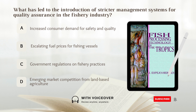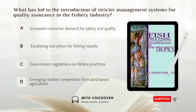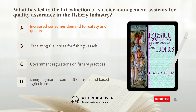What has led to the introduction of stricter management systems for quality assurance in the fishery industry? A. Increased consumer demand for safety and quality. B. Escalating fuel prices for fishing vessels. C. Government regulations and fishery practices. D. Emerging market competition from land-based agriculture. Answer: A. Increased consumer demand for safety and quality led to the introduction of stricter management systems for quality assurance in the fishery industry.